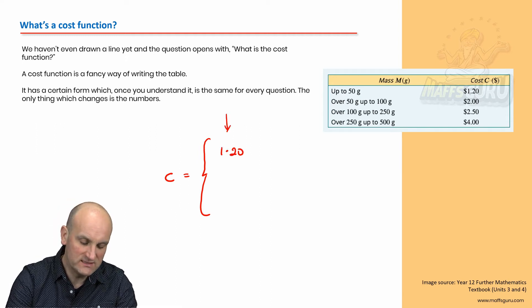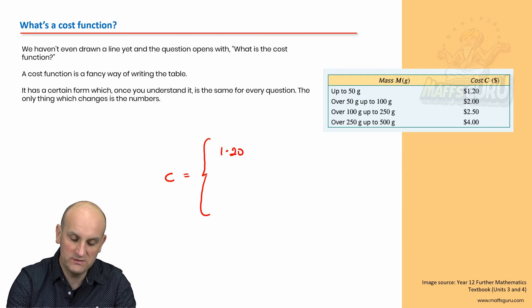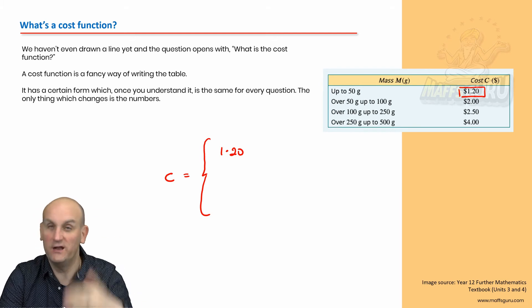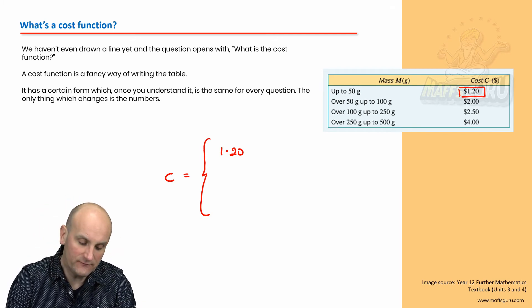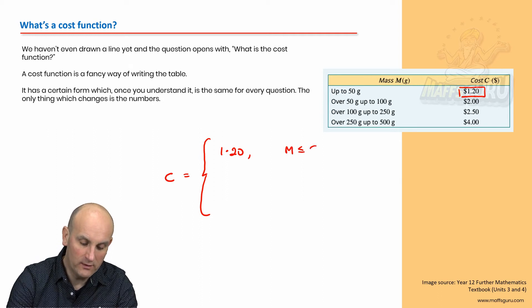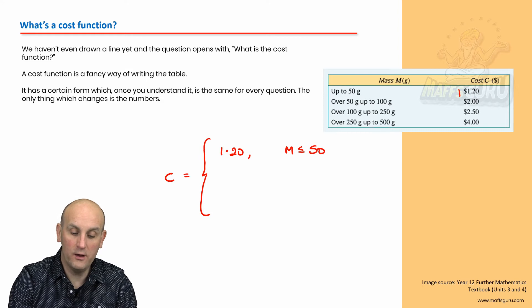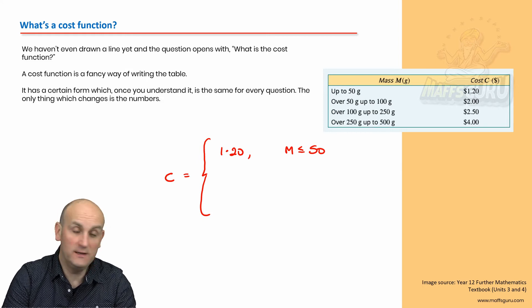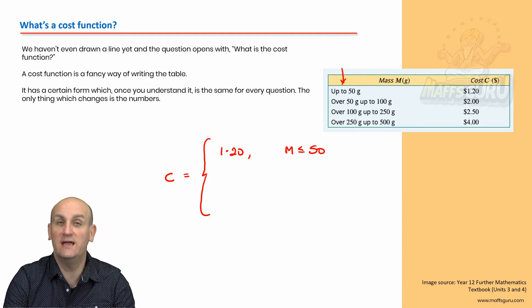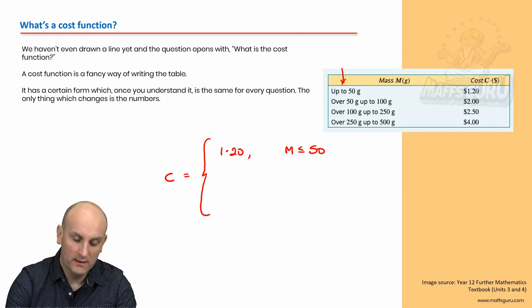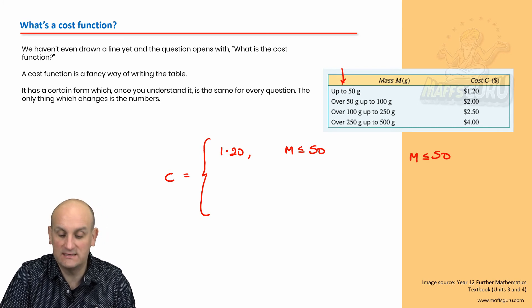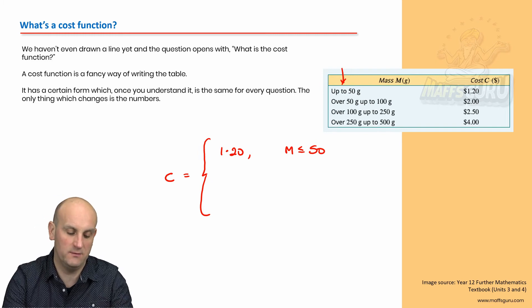Well, the first thing we do is we put all of the costs here. So, I'm going to put 1.20 there. Why on earth am I putting 1.20? Because, that's my first cost. So, trying to draw this cost function, I do it in order. The next thing I have to do is a comma. And, then I put M is less than or equal to 50.